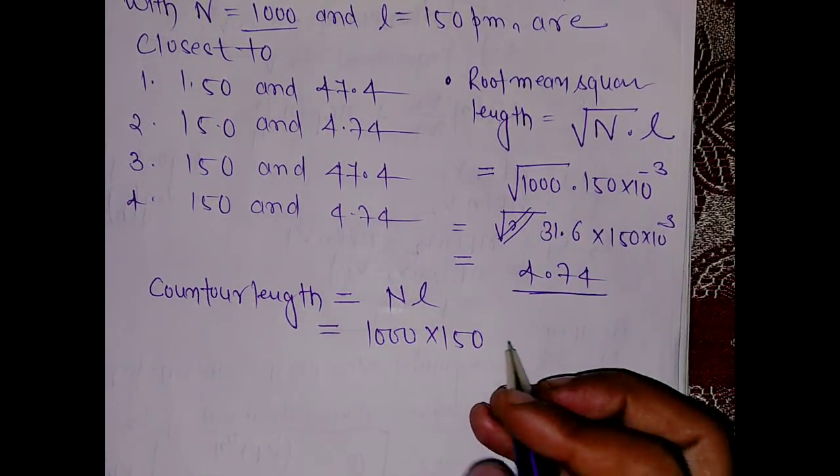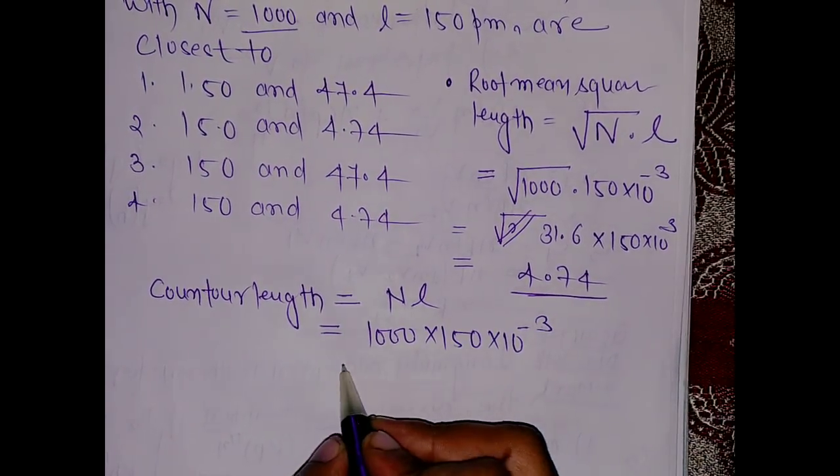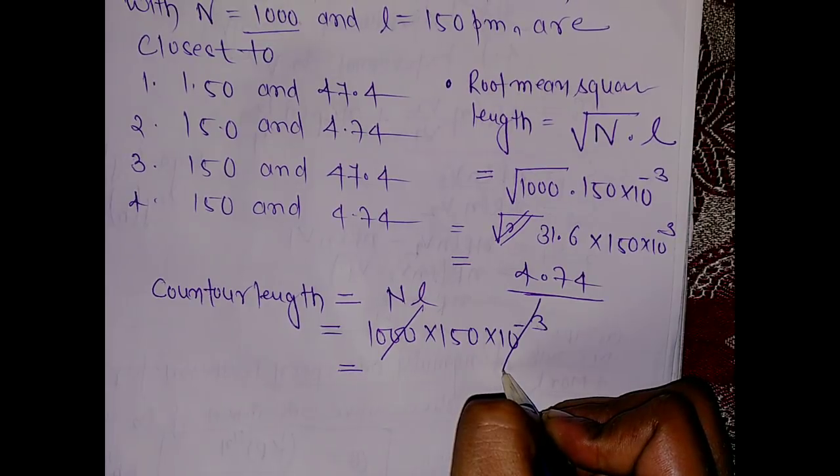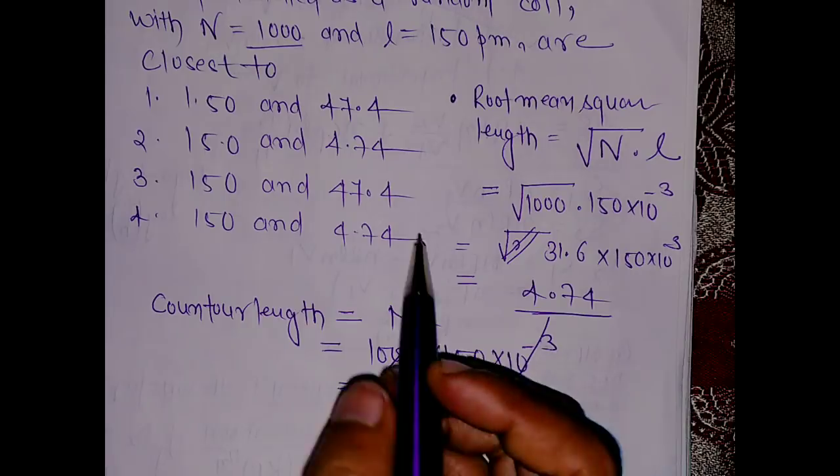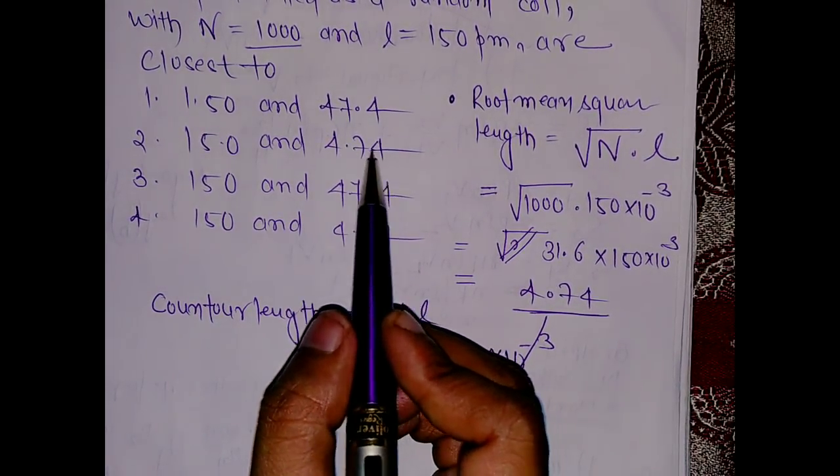It becomes 150 times 10 to the power minus 3 nanometer. The thousands cancel, so we are left with 150 nanometers. So the answer is 4.74 and 150, which is option 4.